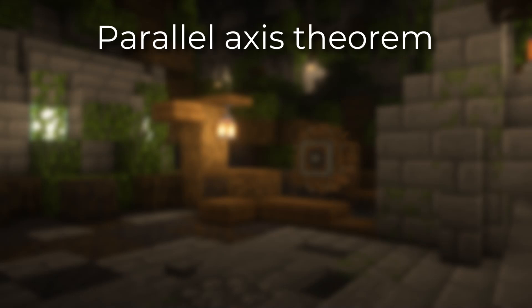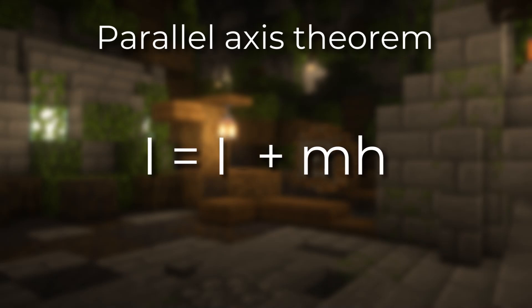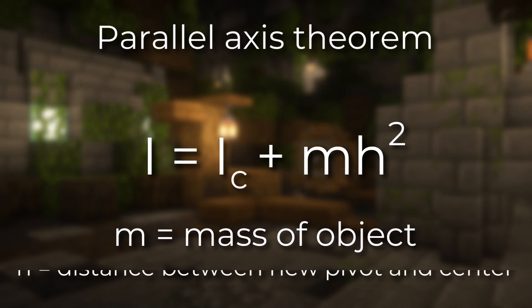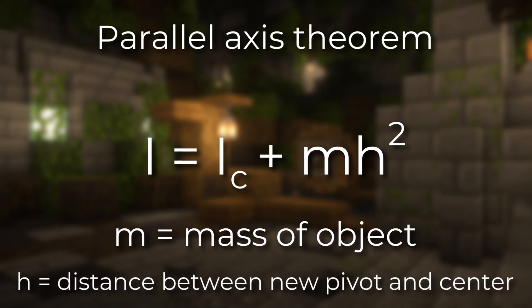The formula is I equals I sub c plus m times h squared. m is the mass of the object, while h is the distance between the center axis and this new axis.